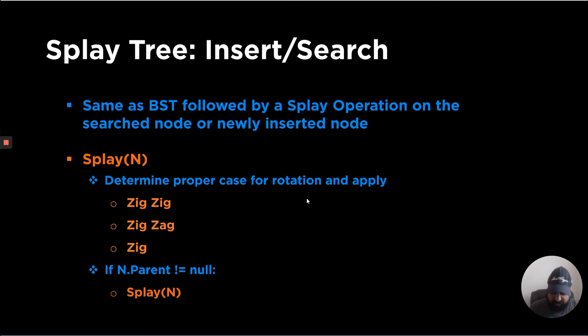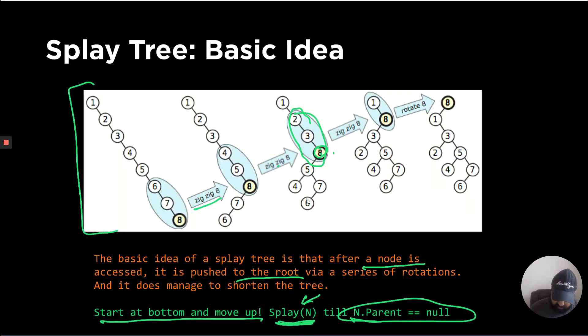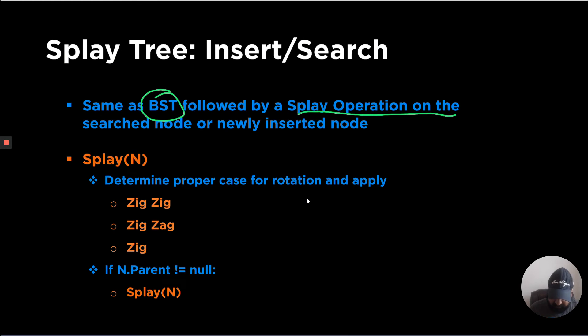So whenever we are trying to insert or search a particular value, the insertion or search is exactly similar as BST, followed by a splay operation on the newly inserted node or the search node. For example, if you inserted a new number in this tree, like let's call it 9, that becomes the new node after the insert.